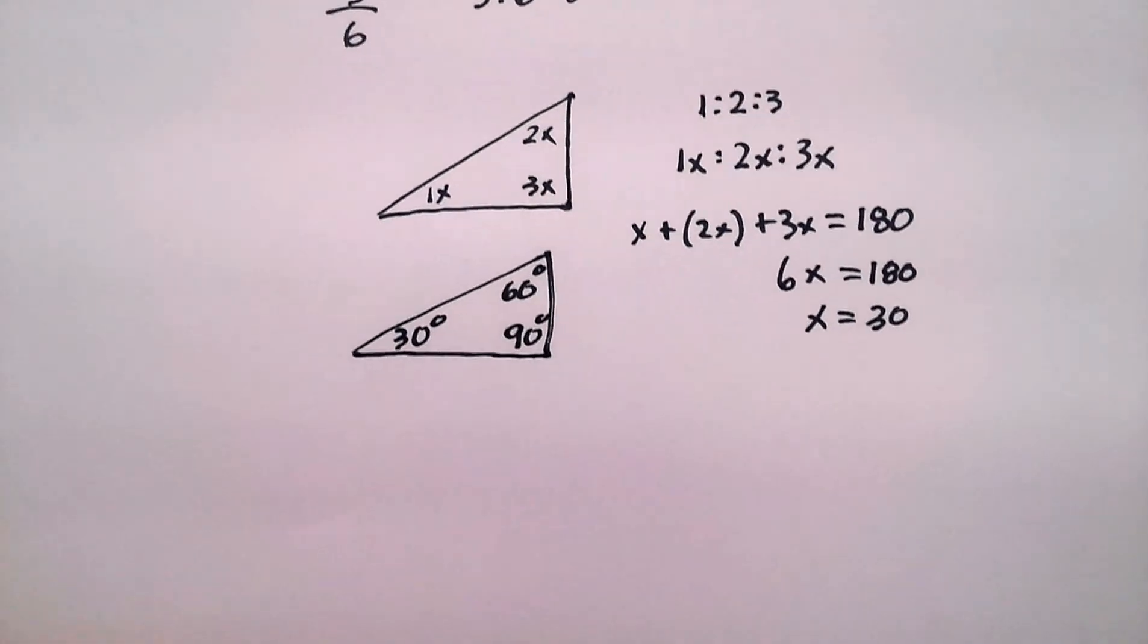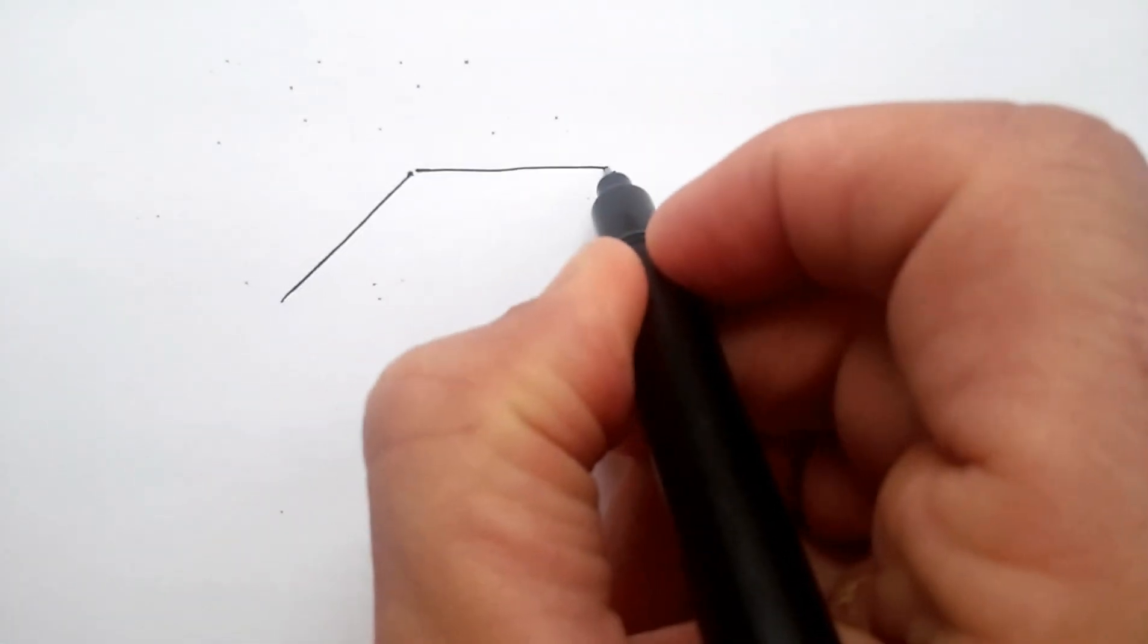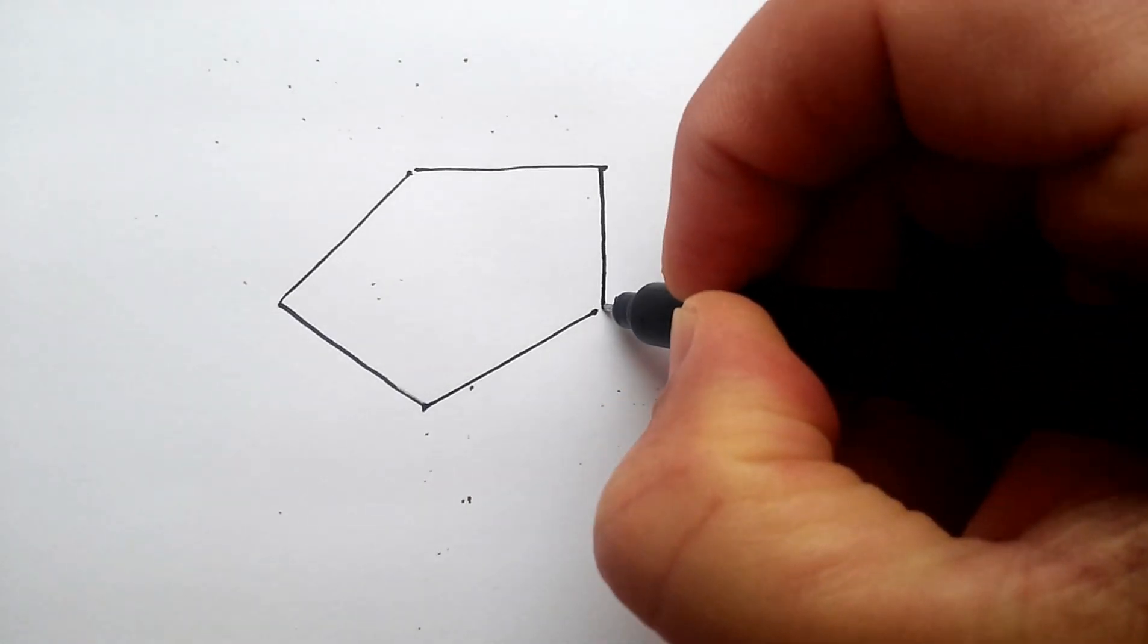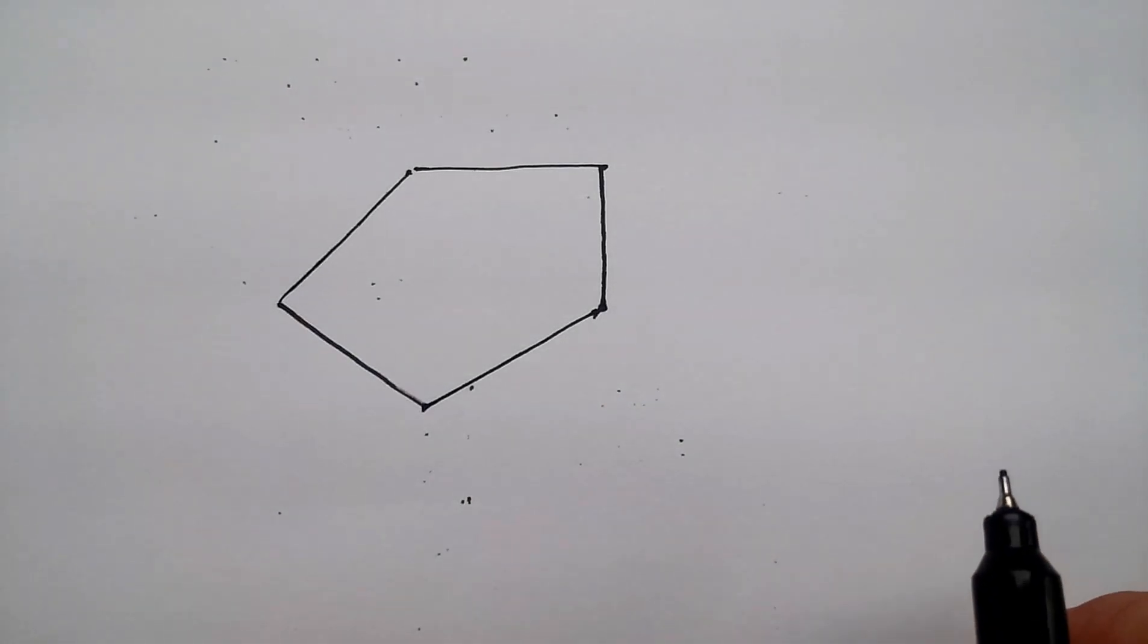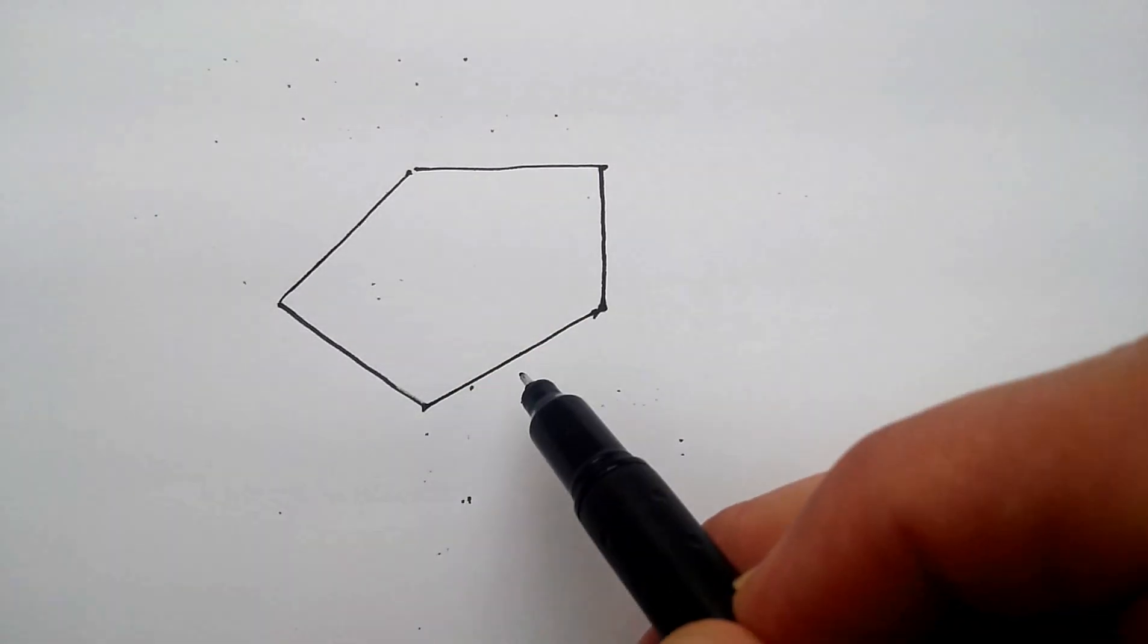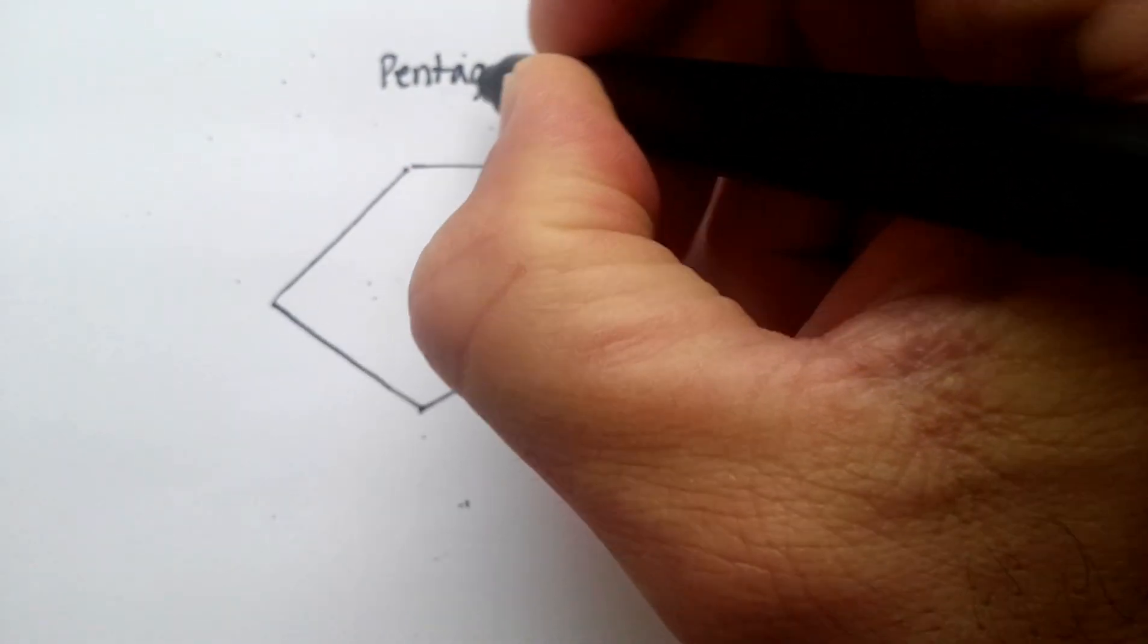Now, let me give you another example. And I'm going to cite some information that we've learned in a previous video. Let's say I have this figure here. Now, those of you who remember how to name polygons, I would count 1, 2, 3, 4, 5. So this is a five-sided figure. This would be a pentagon. Penta meaning 5.